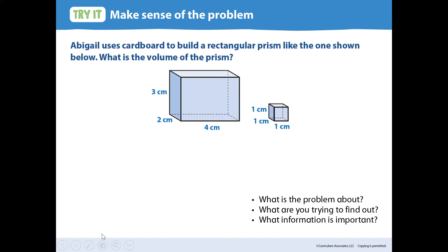Let's think what this problem is about. This problem is about Abigail building a rectangular prism. What are you trying to find out? We are trying to find what is the volume of the prism. And what information is important? And actually that information isn't in the written problem up here. It can be found down here on the diagram.